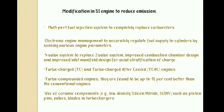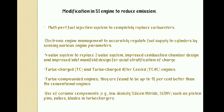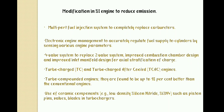The next method is modification of the SI engine to reduce emissions. Changes in engine design are made to reduce and control parameters that promote pollution production, such as compression ratio, combustion chamber wall, timing, and the fuel supply system. Some modifications include: multipoint fuel injection (MPFI) system to completely replace the carburetor, electronic engine management to accurately regulate fuel supply to the cylinder by sensing various engine parameters, and a 4-valve system to replace the 2-valve system for improved combustion.